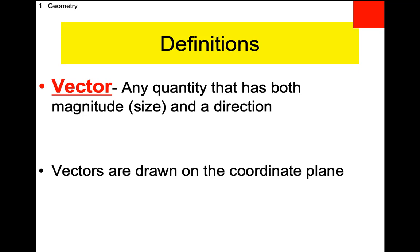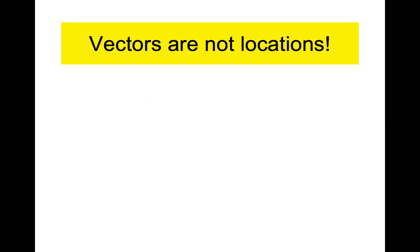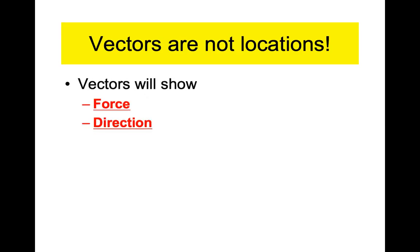You can place the vector anywhere on the coordinate plane. Where it goes physically bears no relationship to where the force is literally occurring. A lot of times they use the origin when you draw it, but not always. Vectors are not a specific location — it's not 'this is happening in quadrant one.' Vectors show force and direction — the magnitude and the direction.